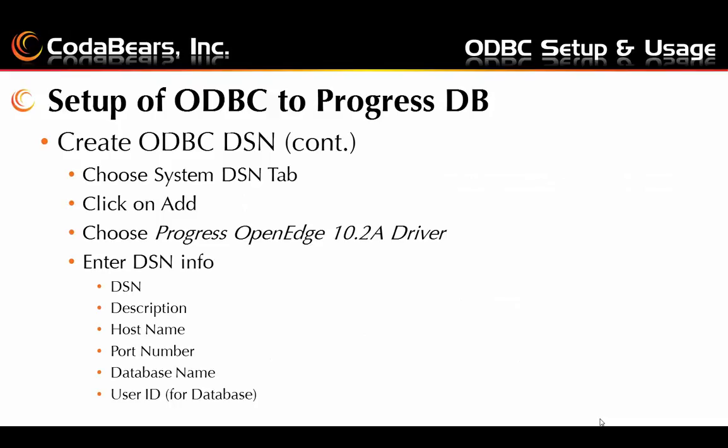Once you are in the ODBC administration tool, choose the System DSN tab, which means the connection will be available for all machine users. You can also create a User DSN that's specific to a particular user. If you have a shared machine with sensitive data, that might be the better choice, but that's beyond the scope of today's discussion — we're just going to show how to do a System DSN.